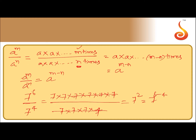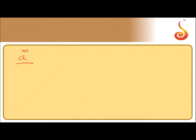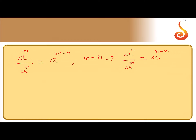What happens if the numerator power is less than the denominator power? In the formula a^m divided by a^n = a^(m-n), if m equals n, then a^n divided by a^n equals a^(n-n). The left-hand side, by cancellation, equals 1, since a is non-zero. Therefore, a^0 is defined as 1; a^0 always equals 1.